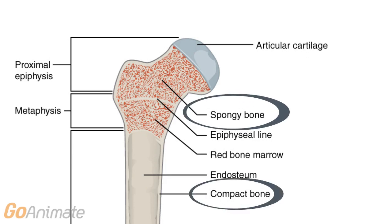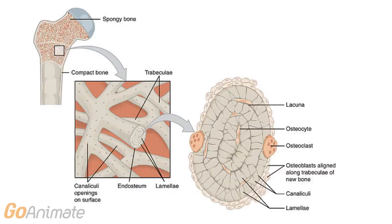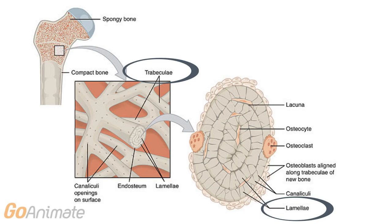The inside of long bones contains two types of bone: spongy and compact bone. Spongy bone contains trabeculae that help give it strength while reducing the overall weight of the bone. The trabeculae develop along the lines of stress. The matrix of spongy bone is arranged in lamellae, with few osteons.